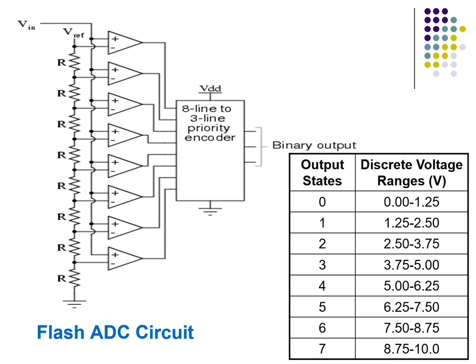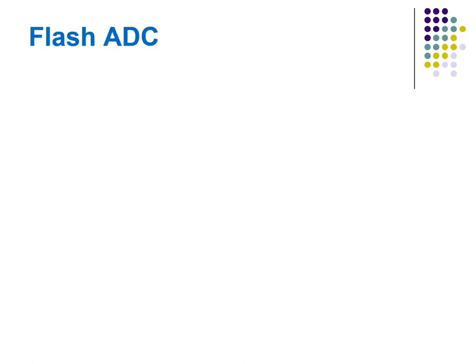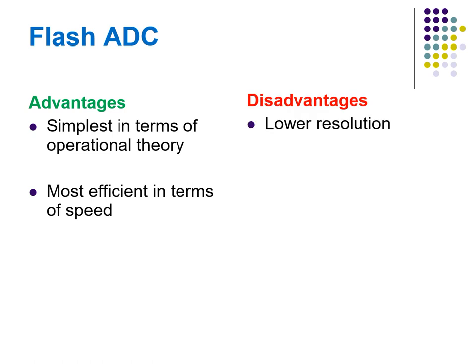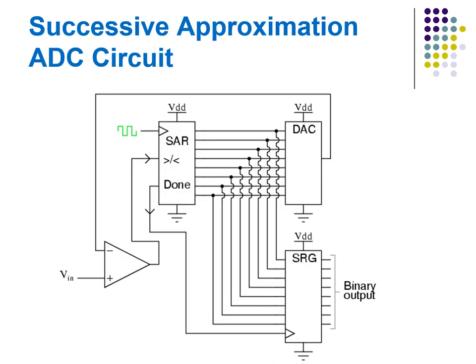The priority encoder generates a binary number based on the highest-order active input, ignoring all other active inputs. The analog input and the corresponding digital output shows a very accurate conversion. Advantages of flash converters: simplest in terms of operational theory and most efficient in terms of speed. Disadvantages: lower resolution, expensive, and for each additional output bit the number of comparators is doubled — for 8 bits, 256 comparators are needed.